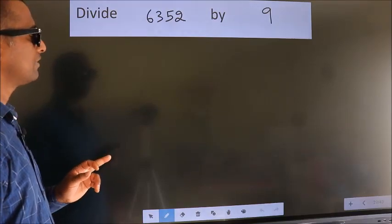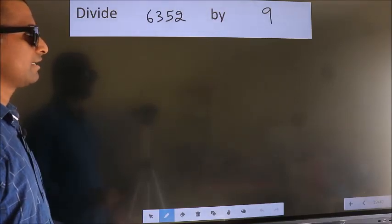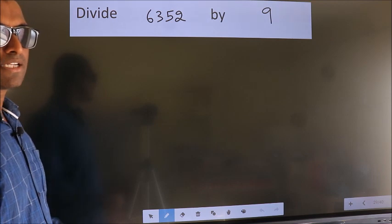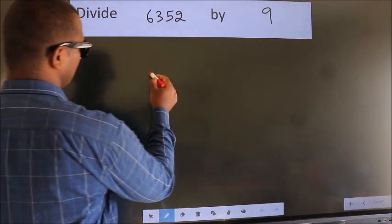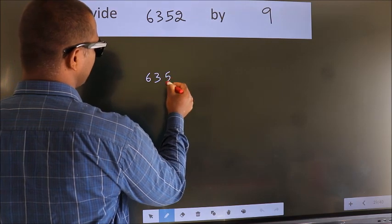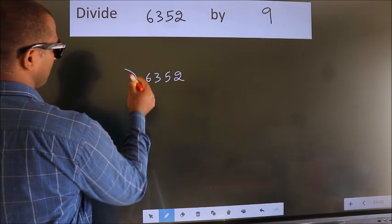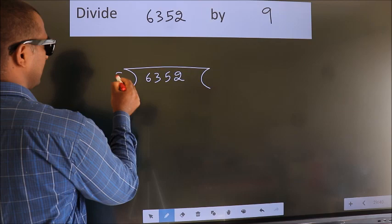Divide 6352 by 9. To do this division, we should frame it in this way: 6352 here, 9 here.